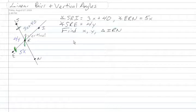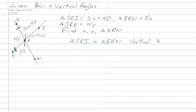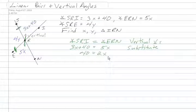Since they're vertical, what this means is that angle SRI is congruent to angle ERN because they're vertical angles. Then angle SRI is 3x plus 40 and angle ERN is 5x by substitution. We know then that 40 is equal to 2x by subtraction, and x is equal to 20 by the division property.